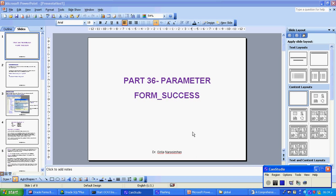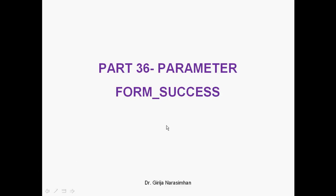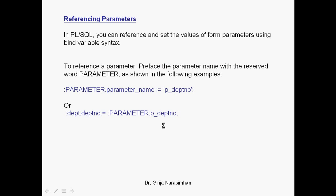This is part 36 covering parameter form and form_success, which is exception handling. We'll see what a parameter is and how to use it in form building. A parameter lets you reference and set form parameter values using bind variable syntax. To reference a parameter, the syntax should be colon parameter dot name. For example, department.department_number is equal to parameter dot department_number.